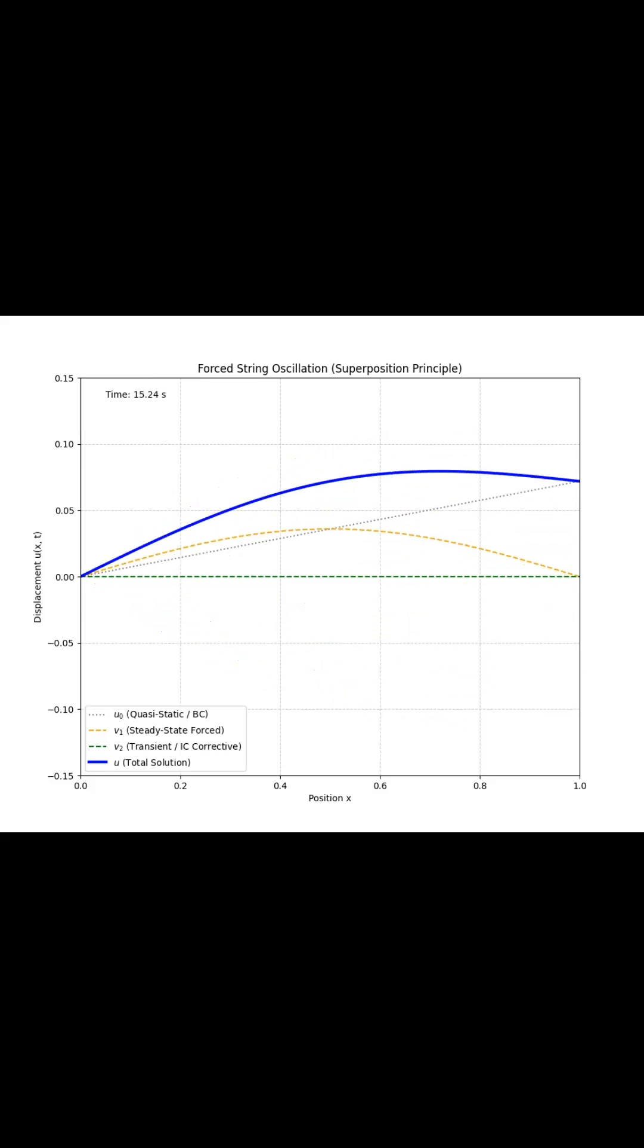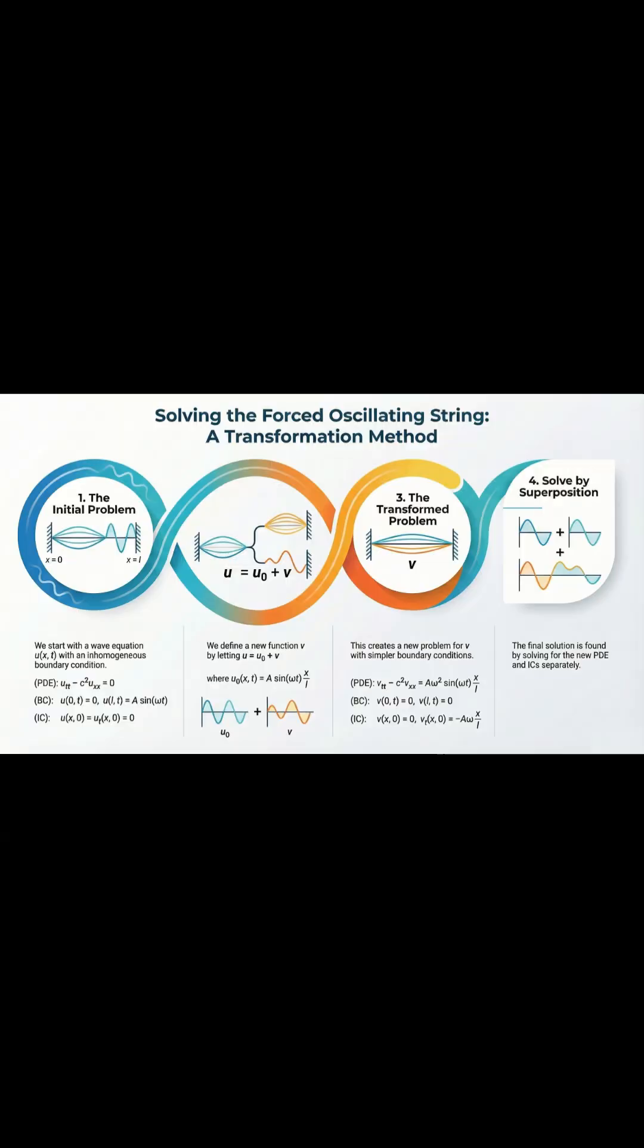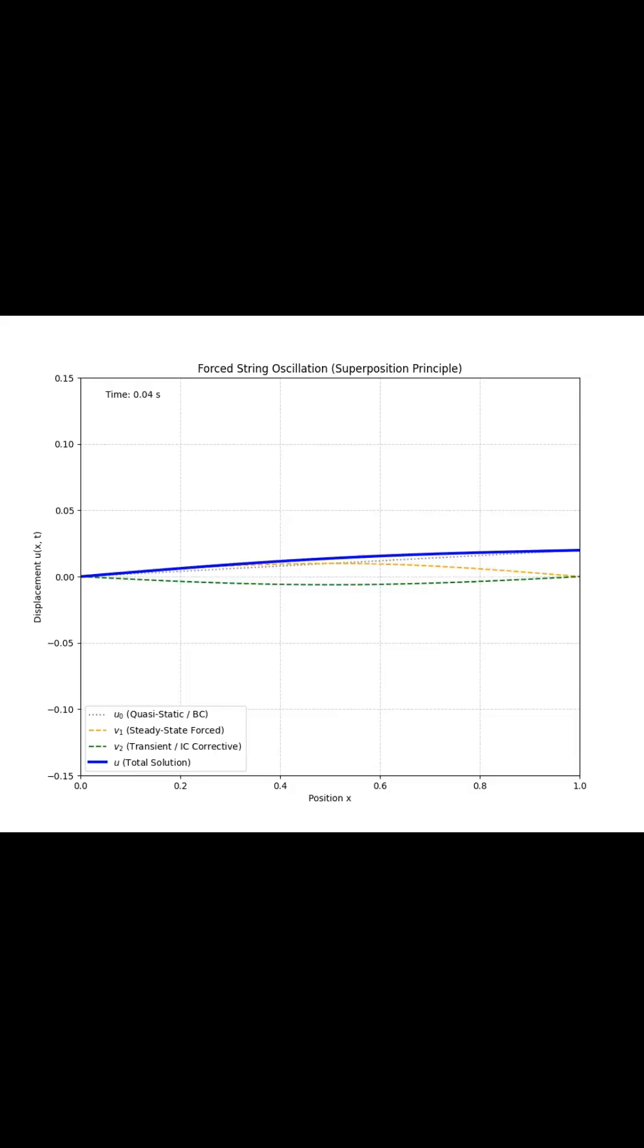First, the core challenge is something called an inhomogeneous boundary condition, which is just a fancy way of saying that forced end won't stay put. The strategy is to mathematically transform the problem into a much simpler one where both ends are held perfectly still.